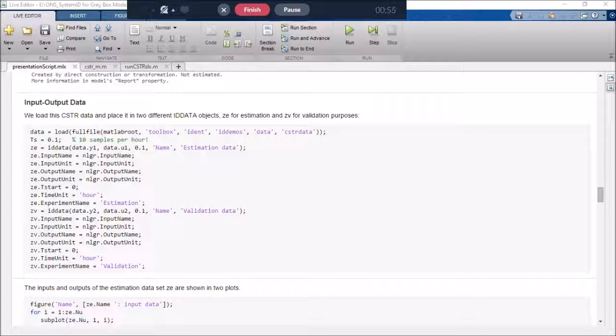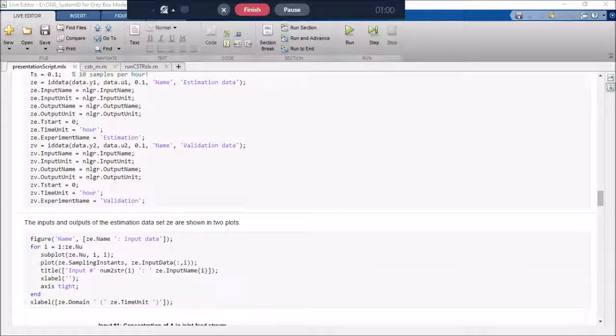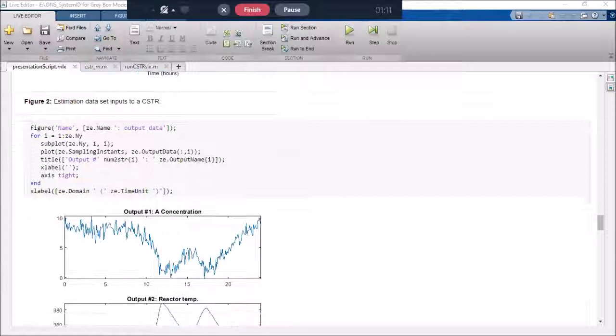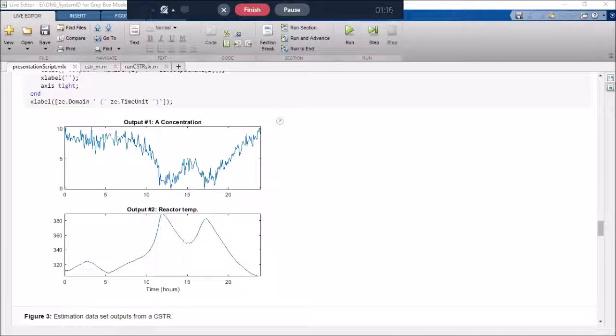Plotting our, or creating our data objects, we have our estimation subset and our validation subset. Plotting our input variables, we can see them in these plots. And then our output variables. We have the concentration and the reactor temperature. Here you can see at 10 hours signs of ignition as the reaction starts to proceed far more rapidly. Because it is exothermic, the temperature rises more than 80 degrees.